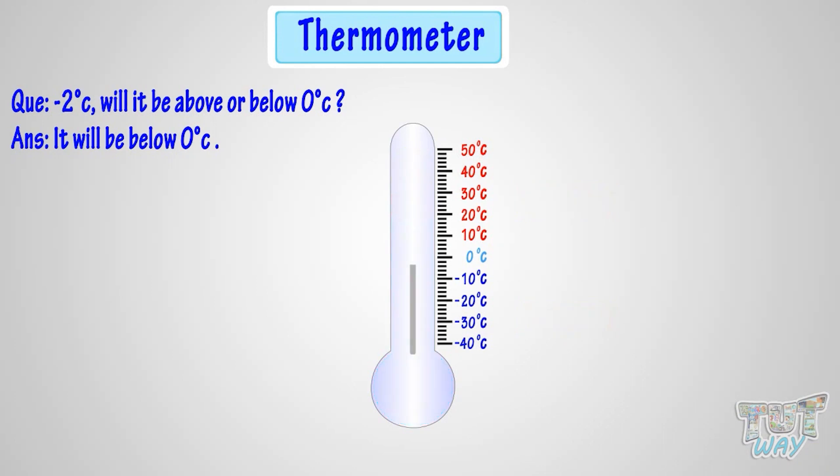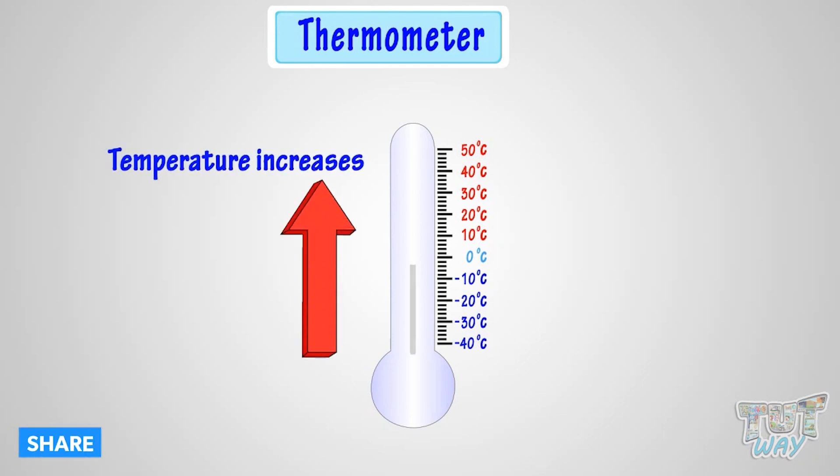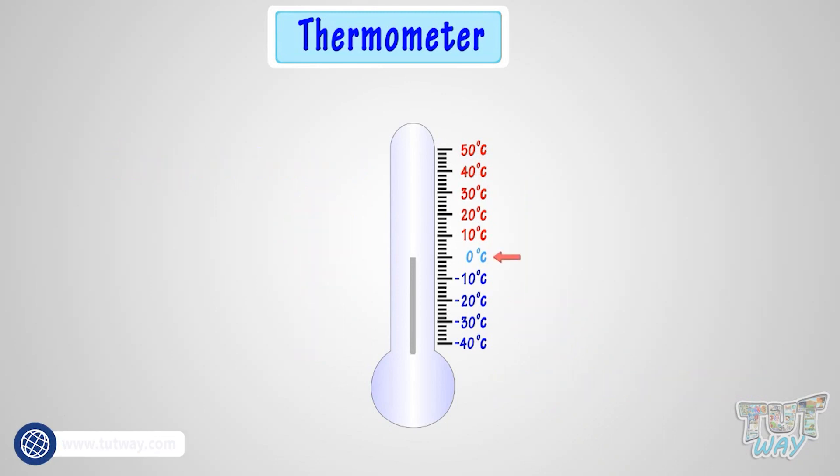So what have we learned? We have learned that the thermometer is used to measure temperature, and temperature increases as the silver line inside the thermometer rises and temperature decreases as the same line comes down, and freezing point of water is 0 degrees Celsius.